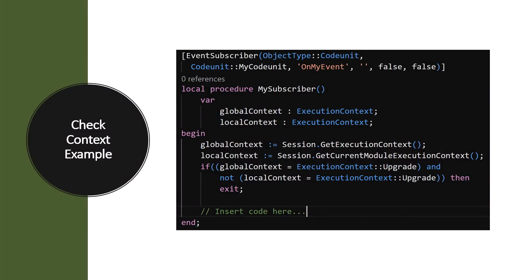A quick example of checking the context: we've got two variables of execution context. First, get the execution context for the entire system. Then get my local context for my current extension. A quick check: if the system is in an upgrade but my extension is not upgrading, then in this example I just exit - this is not logic I need to worry about when somebody else is running an upgrade. If I'm not in an upgrade, or it is my extension doing the upgrade, then I have some code I want to execute. We've also talked about being able to attribute event subscribers so you don't have to write all this boilerplate code, but we haven't plugged this into everything yet.